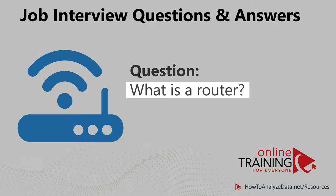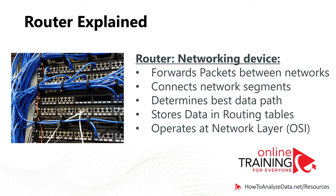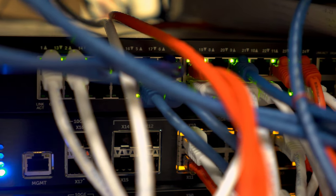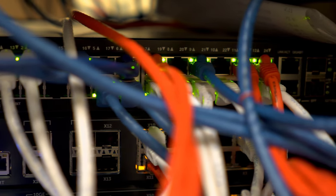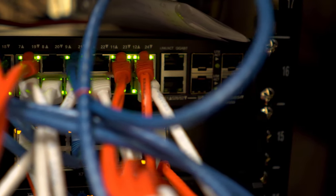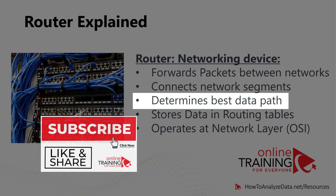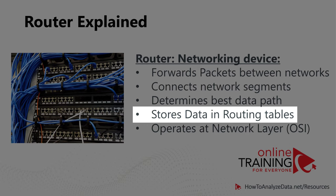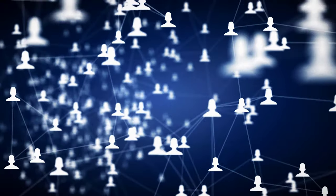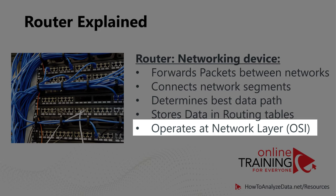A lot of times you might be asked, what is a router? A router is a networking device that forwards data packets between computer networks. Routers can connect two or more network segments, and by connecting these segments they establish two or more data lines from different IP networks. A router is a very intelligent network device which stores information in its routing tables, such as paths, hubs, and bottlenecks. Using this information, a router can quickly determine the best path for data transfers. A router is one of the few devices that operates on the OSI network layer.